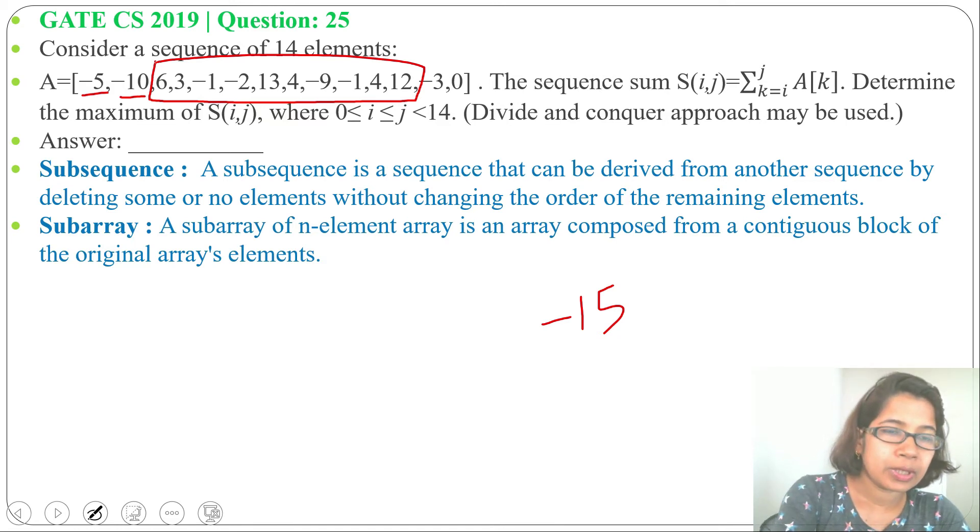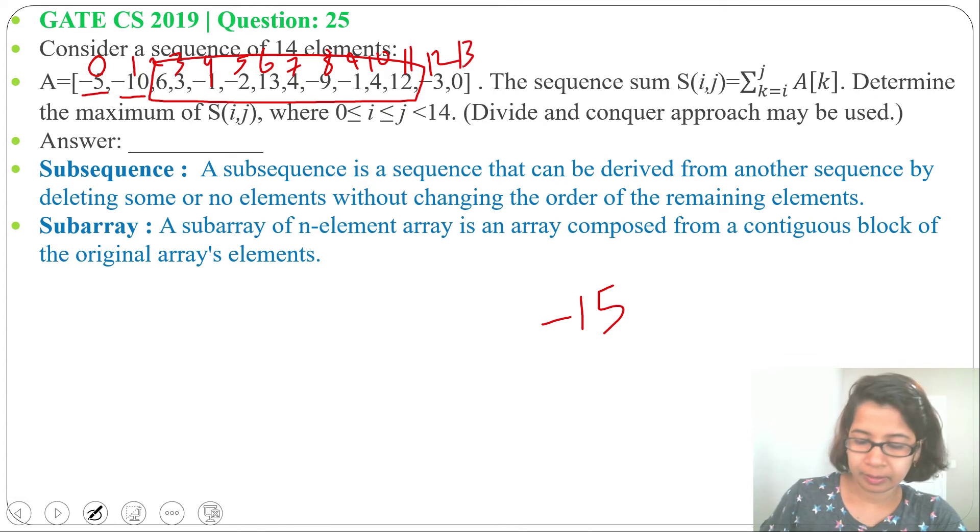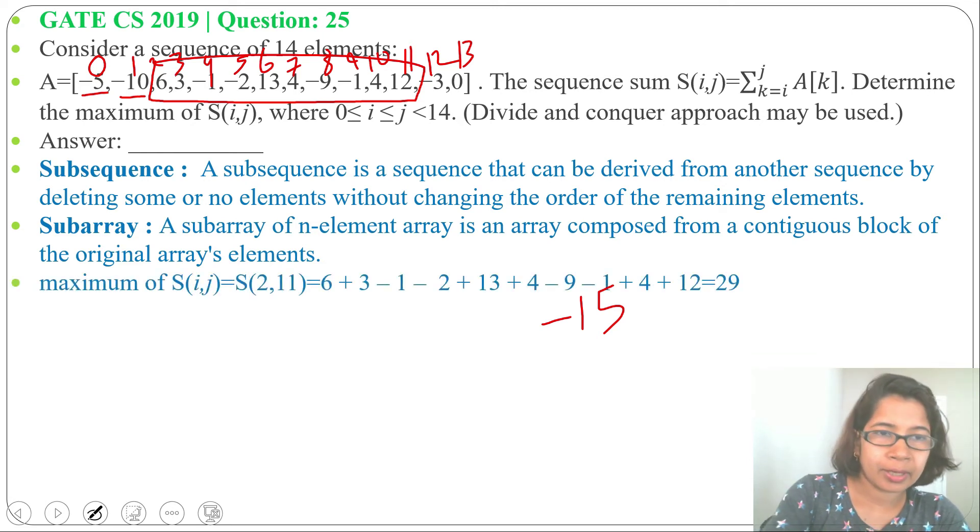So this is 0 index, 1 index, then 2, 3, 4, 5, 6, 7, 8, 9, 10, 11, 12, and 13. So what we'll do, we'll consider i equals to 2 and j equals to 11.